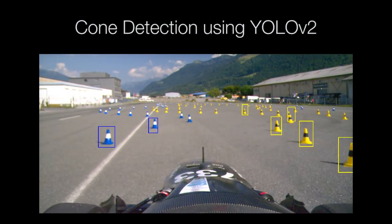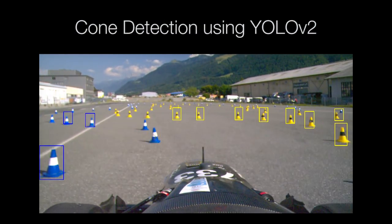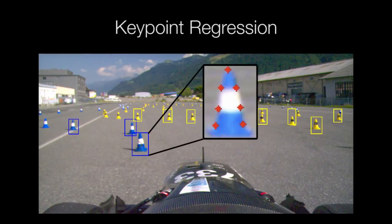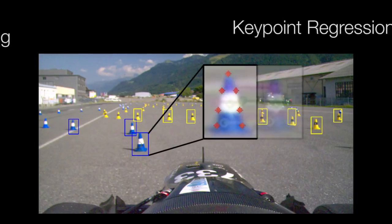The cones in an image are estimated using the state-of-the-art YOLO V2 algorithm. Rough 3D position estimates are obtained by regressing keypoints and exploiting the prior knowledge of cones.